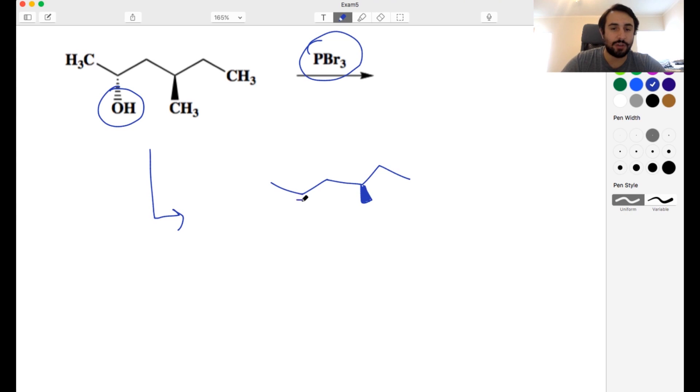And the other thing we have to remember is that we will do so with retention of stereochemistry. So we had a dash bond there and it will remain a dash bond here just with the bromine instead of the hydroxyl. So this is very, this is a very common one.